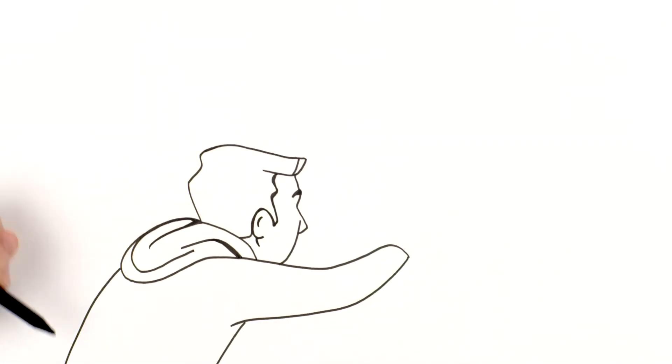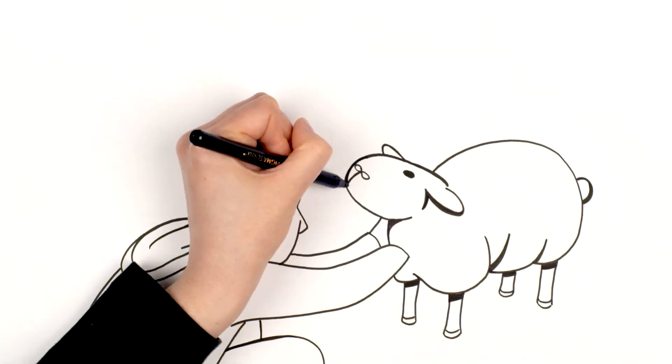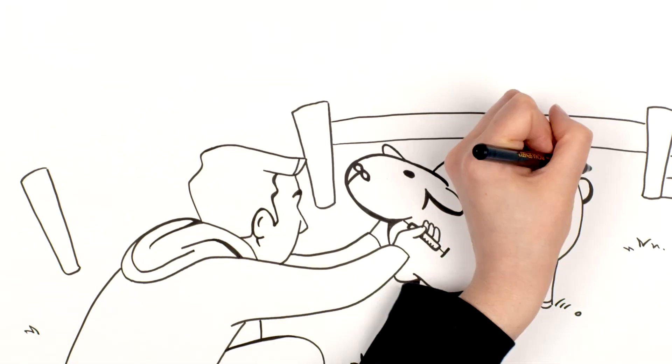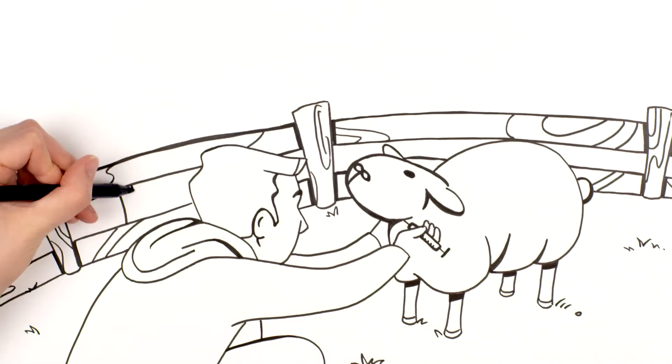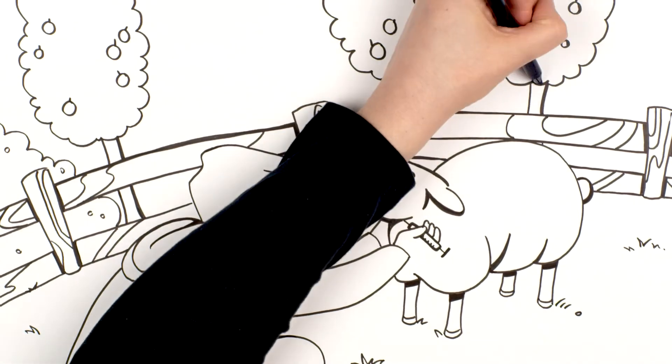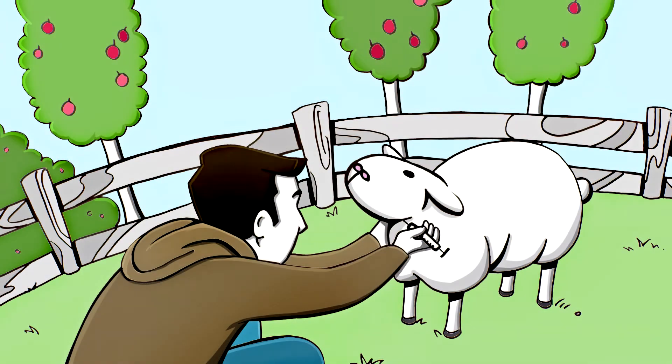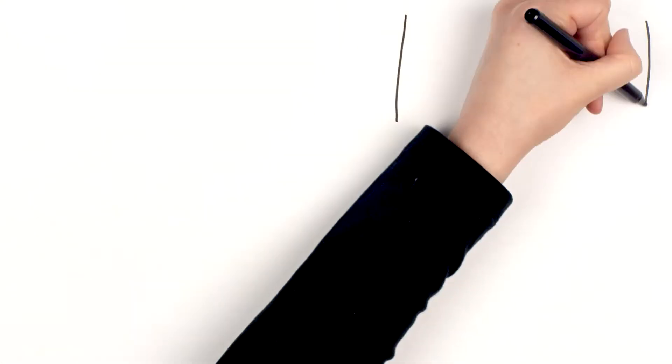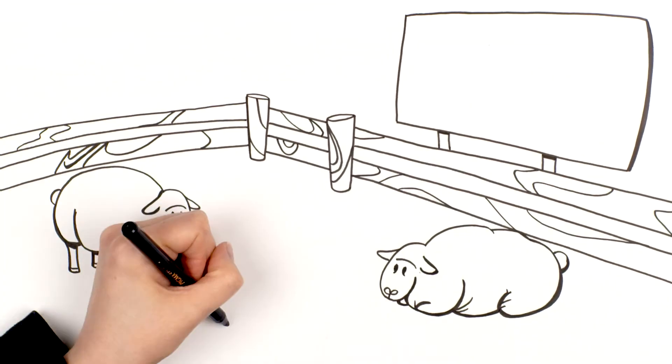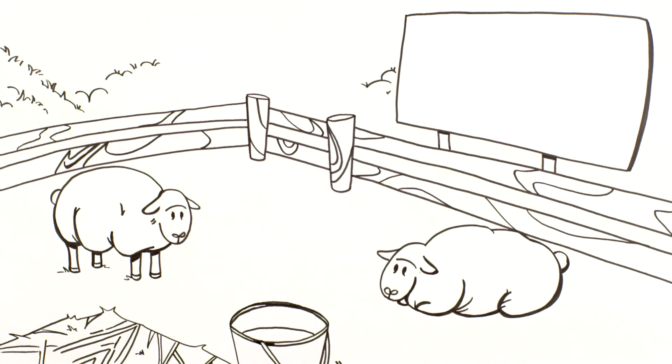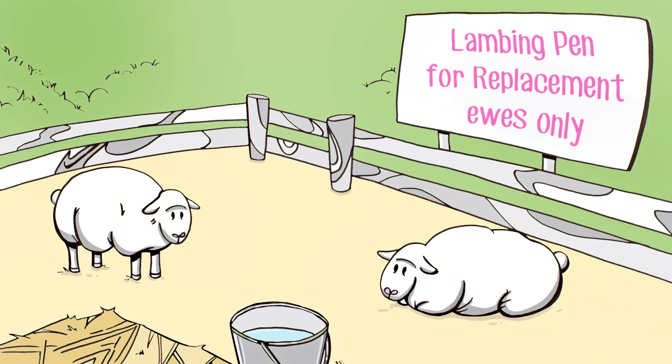After discussing my EAE problem with my vet, we decided to develop a vaccination plan for my flock. She explained that following a vaccination plan would help manage the issue, especially if I made sure to use good management practices to prevent further problems. These days I'm more careful about where my replacement lambs come from, and I've started lambing my replacement ewes in a separate area away from my other ewes. It's just better practice in my book.